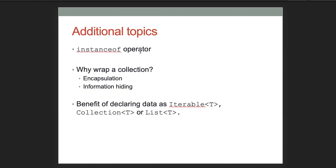Other things you will see: the instanceof operator, why we would wrap a collection — to seek better encapsulation and information hiding. Know the benefits of declaring data as Iterable<T>, Collection<T>, or List<T>: Iterable<T> gives the ability to use it in a for-each loop; Collection<T> gives the ability to use it anywhere a collection is expected; List<T> is more specific and says the data can be used anywhere an ordered list is expected.